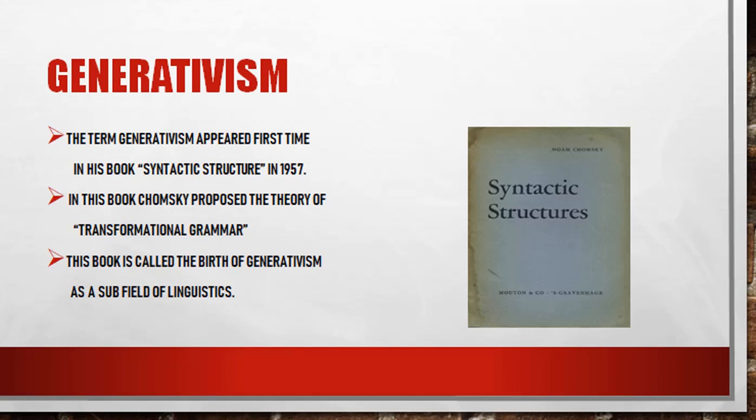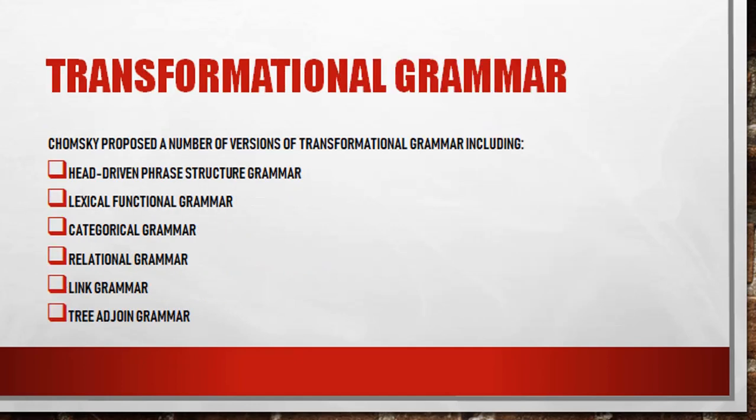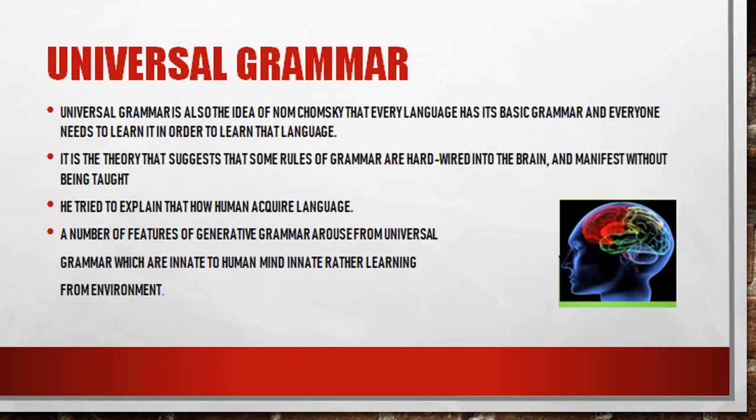Noam Chomsky introduced generativism; this was considered a sub-field of linguistics. Chomsky also introduced the concept of Transformational Grammar, which includes: head-driven phrase structure grammar, lexical functional grammar, categorical grammar, relational grammar, link grammar, and tree-adjoin grammar. He provided all these versions in his book.